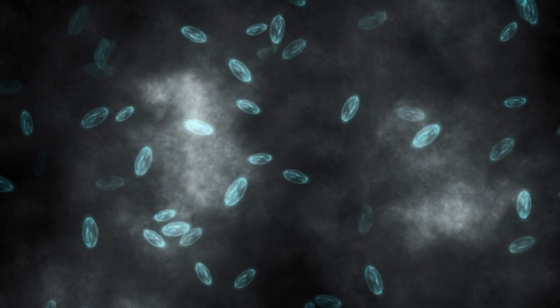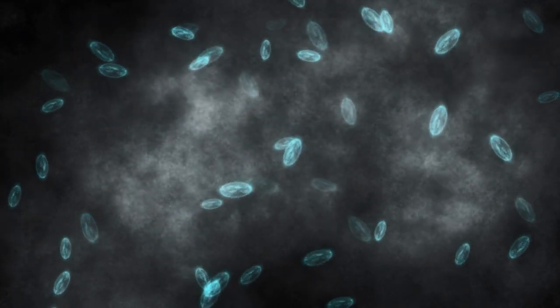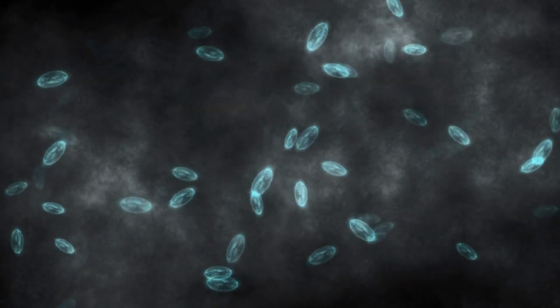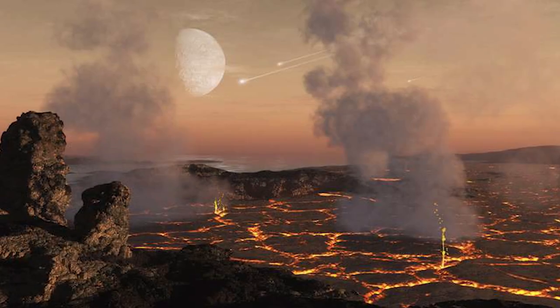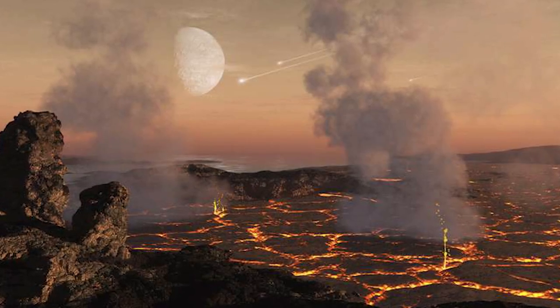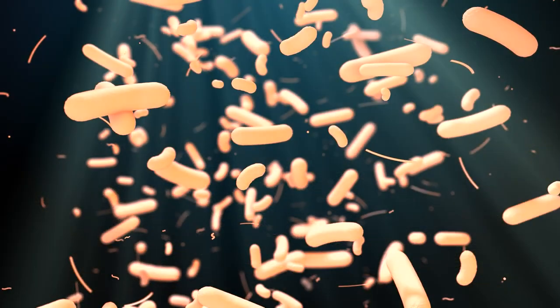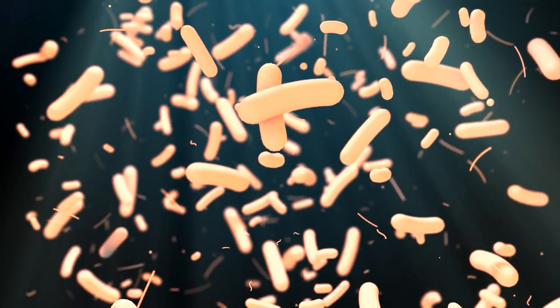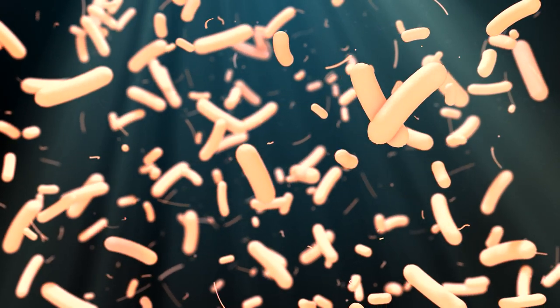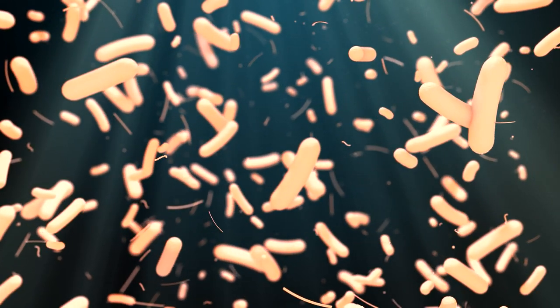The organisms living on Earth at that time, such as bacteria and microbes, didn't need oxygen. These organisms used carbon dioxide and hydrogen sulfide to convert the energy contained in light into chemical energy. However, beginning around 2.5 billion years ago, something happened that would significantly change the history of the Earth.